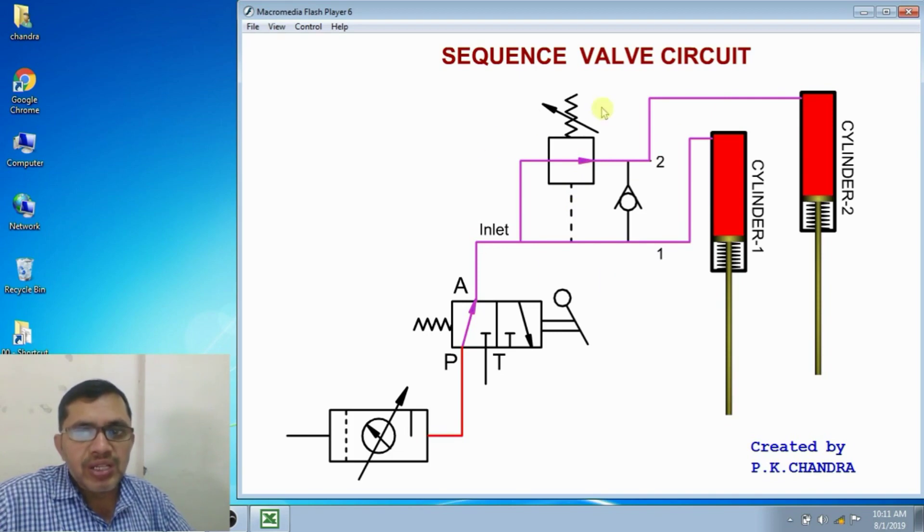And usually, sequence valves are used in hydraulic circuits only. Rarely, sequence valves are used in pneumatic circuits. In case of pneumatic circuits, we use limit switches and solenoids or limit valves and pilot operated parts.